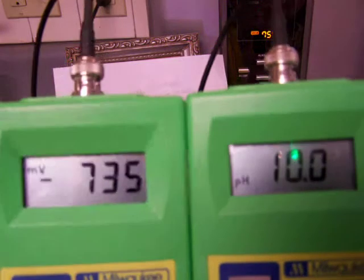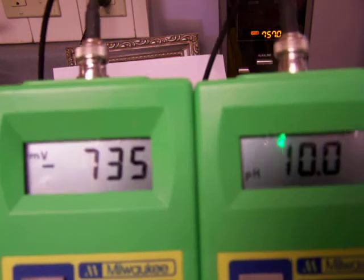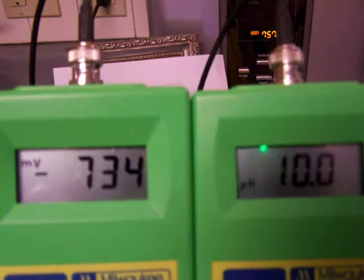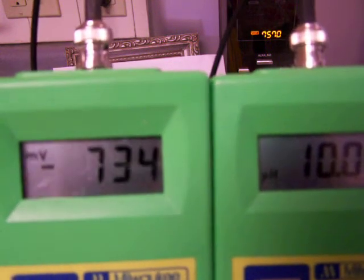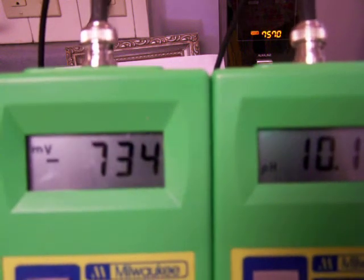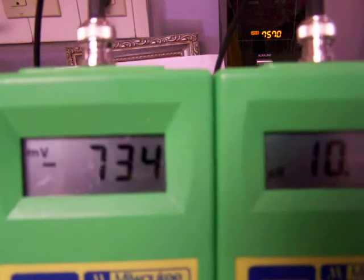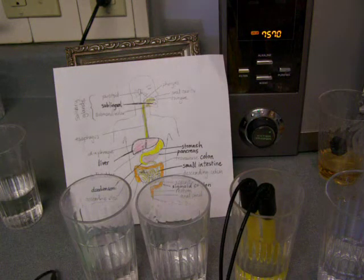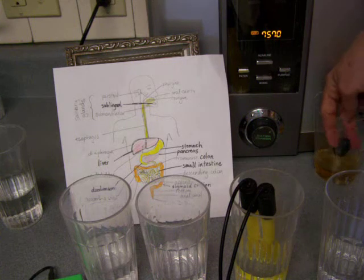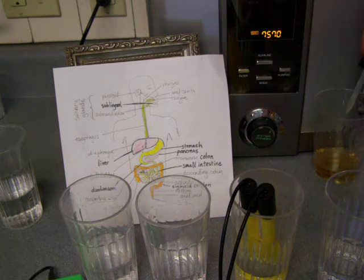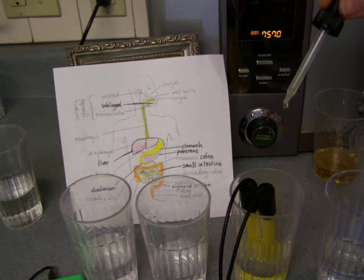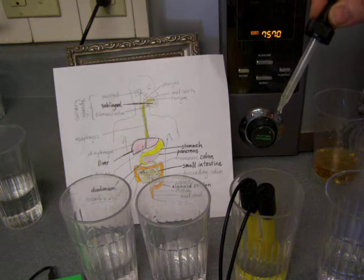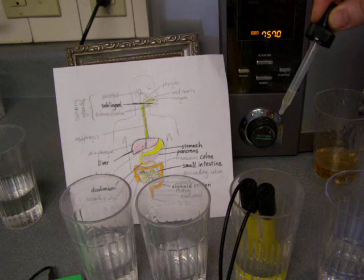Now, this is St. Louis water, and I should say that our tap water probably is about a 10 pH. So, that's why Level 2 is coming up like this. And the negative 734 is very good ORP for that. So, I'm going to go ahead and drop three drops of our simulated hydrochloric acid here. Let's see what happens.